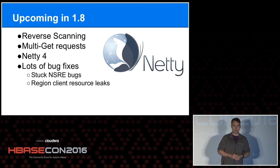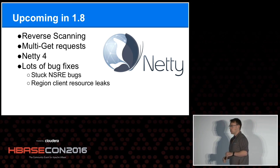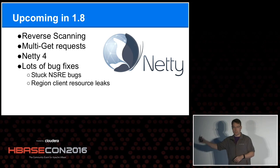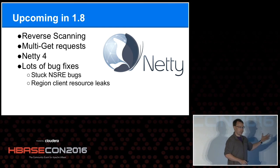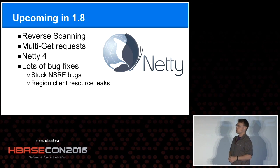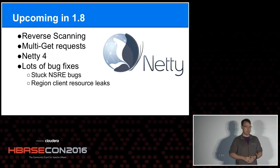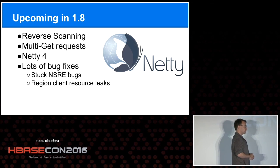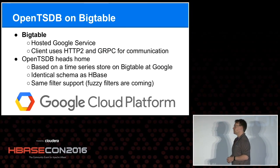Some upcoming async HBase features: version 1.7 was released this year, and 1.8 is in the works. We committed the reverse scanning patch. We're also working on multi-gets - we need that desperately at Yahoo to help with the cardinality problem where the fuzzy row filter won't help. We'll upgrade Netty as well, plus some bug fixes around stuck NSREs in region client resources.